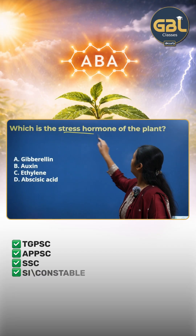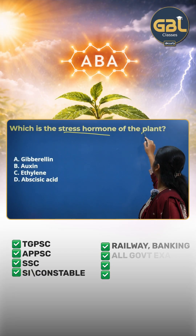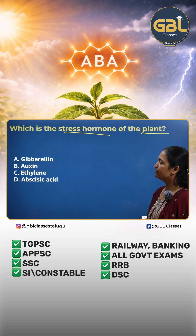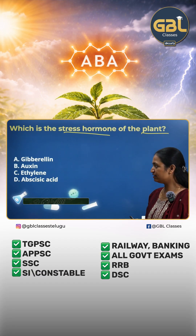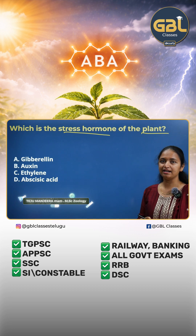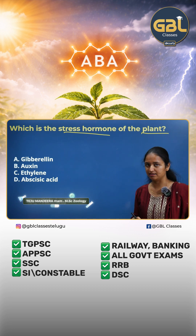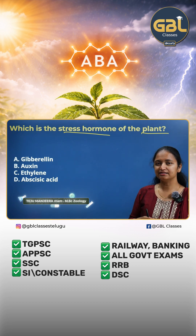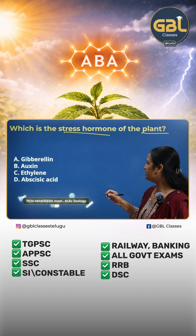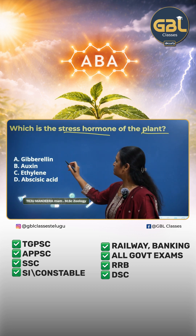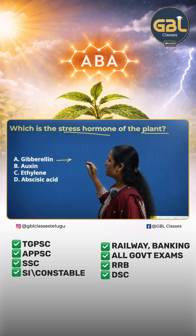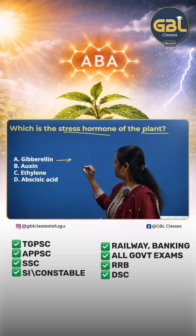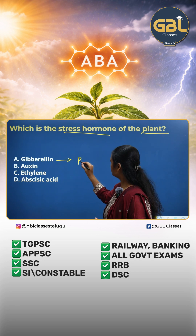Which is a stress hormone of the plant? The options are gibberellin, auxin, ethylene, and abscisic acid. Let us discuss each option. The first one is gibberellin — it promotes growth.